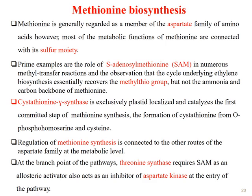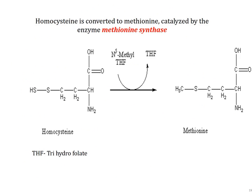At the branch point of the pathways, threonine synthase requires SAM as an allosteric activator and also acts as an inhibitor of aspartate kinase at the entry of the pathway. Homocysteine is converted to methionine by the enzyme methionine synthase. This reaction catalyzes the conversion of homocysteine to methionine.